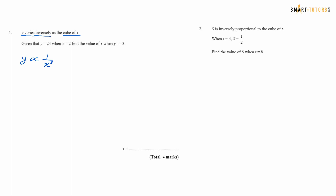There are two topics here: direct proportion and inverse proportion. So y is proportional to 1 over x cubed. You have to make it an equation by changing the proportionality to an equal sign by introducing k. So y equals k over x cubed. Then the given values are y equals 24, x equals 2. So 24 equals k over 2 cubed. 2 cubed is 8, so k equals 24 times 8, which is 192.